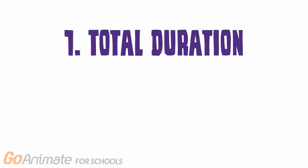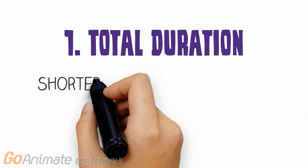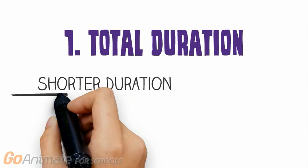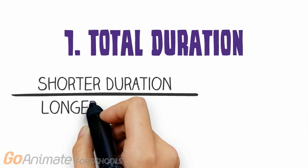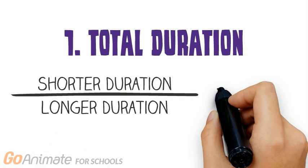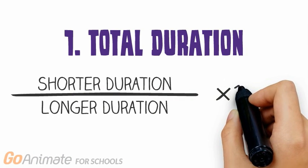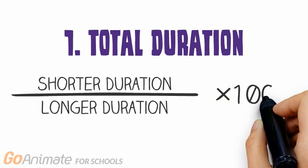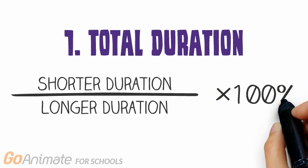Total Duration IOA groups all timings into one sum duration for each observer. The Total Duration IOA is calculated by dividing the shorter of the two durations by the longer, and multiplying by 100%.